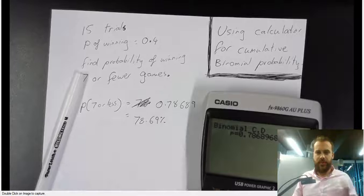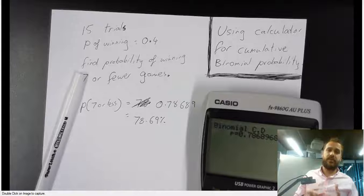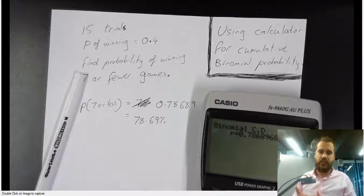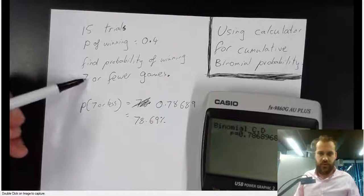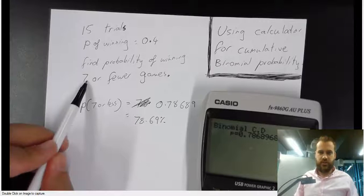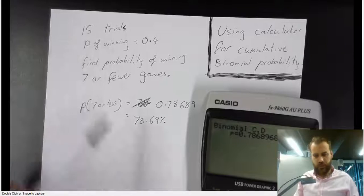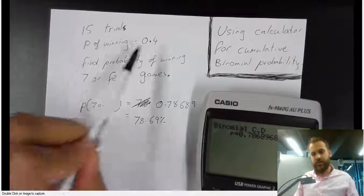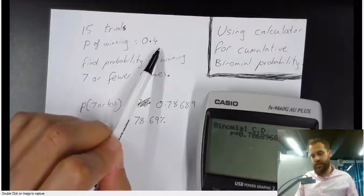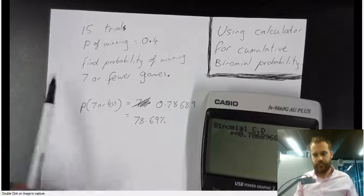So let's talk about this football team. They play 15 games in a season. I wanted to know the probability of them having a losing season — that is, a season where they lose more games than they win. If they win 7 or 6 or 5 or 4, they're having a losing season. The probability of that happening for a team that only wins 40% of their games is 78.69%.